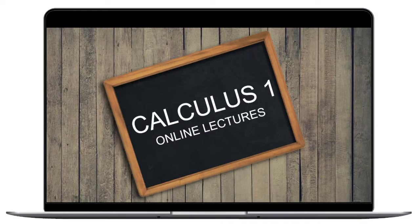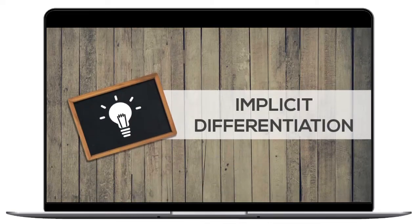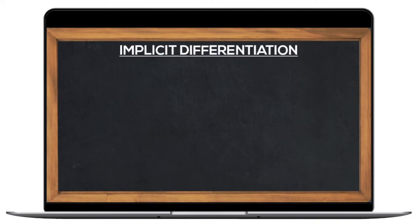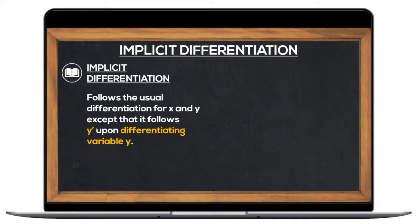Welcome to Online Lectures of Calculus 1 or Differential Calculus. For today, we'll be discussing Implicit Differentiation. So let's define this first. Implicit Differentiation follows the usual differentiation for x and y, except that it follows y prime upon differentiating a variable y. To further illustrate this definition, let's solve the following set of examples.